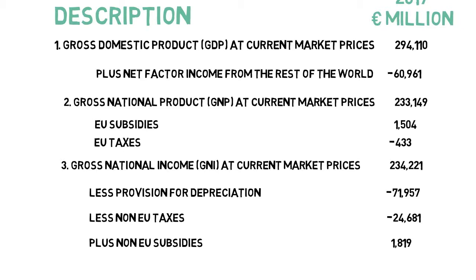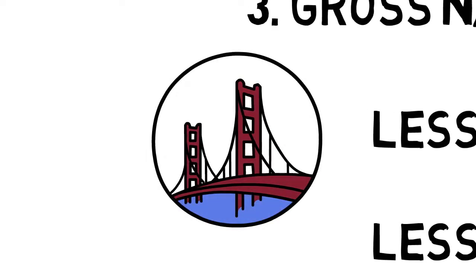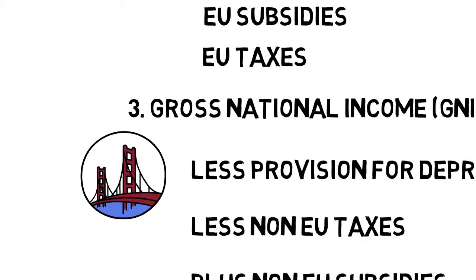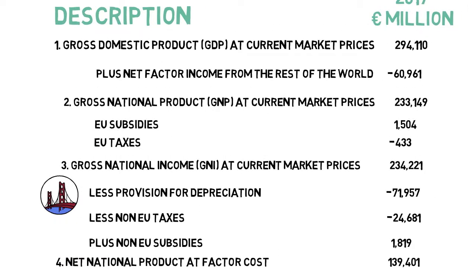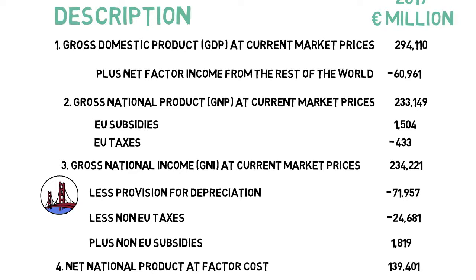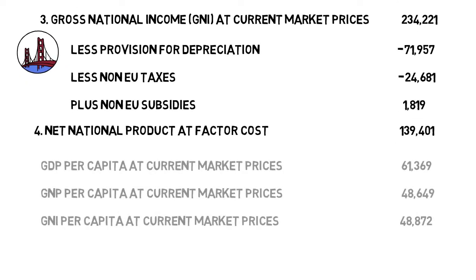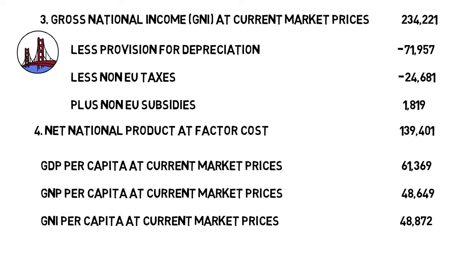To get an even more accurate figure, we also have to account for depreciation in Ireland — almost minus 72 billion. This is the erosion of asset values, including buildings, transport, machinery, and R&D. This yields a Net National Product at factor cost of 139 billion — quite a bit different from the GDP figure at the top. Depreciation is very large in Ireland due to the amount of produced assets.